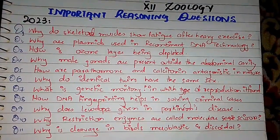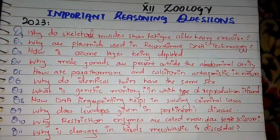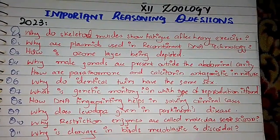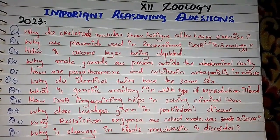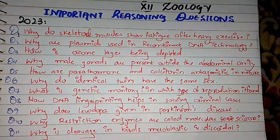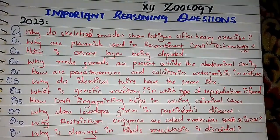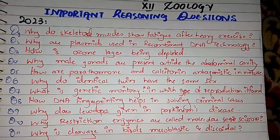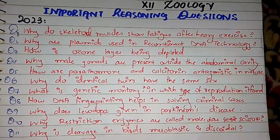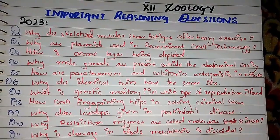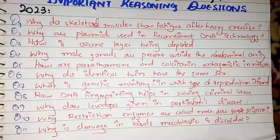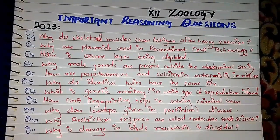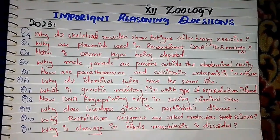That's why testes are present outside the body cavity - because they need a cooler environment than normal body temperature to be able to produce gametes. Question number 5: How are parathyroid hormone and calcitonin antagonist in nature?